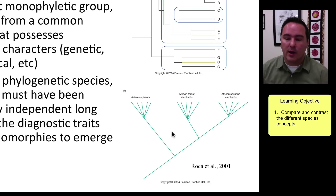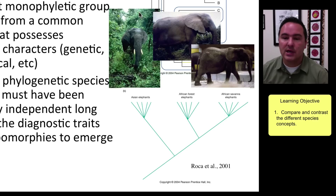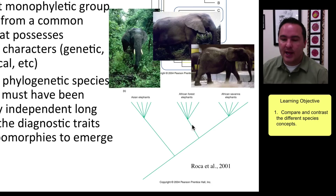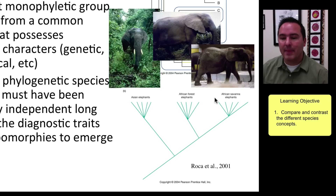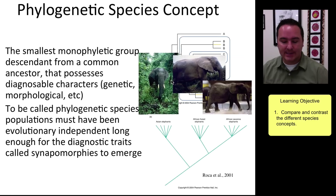A species under this concept possesses genetic and morphologically diagnosable characters unique to that group only. A popular example is elephants: for many years it was believed there were only two species — Asian and African — but phylogenetic analysis shows Asian elephants group by themselves, African forest elephants form a group, and African savannah elephants form a group, supporting three extant species.